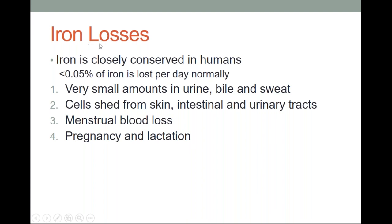Iron is closely conserved in humans — recycling takes place so that even after red blood cells are destroyed in the reticuloendothelial system, transport iron is still available as transferrin. Very small amounts of iron are lost in urine, bile, and sweat, and iron is shed from the skin, intestinal, and genitourinary tracts. Menstrual blood loss can cause iron loss, and there is significant iron loss in pregnancy and lactation. Other than these, there is no major iron loss from the body.